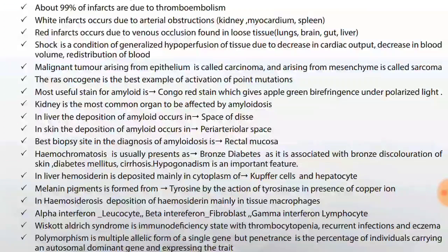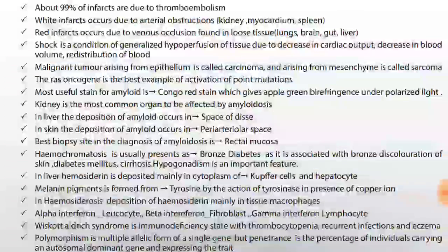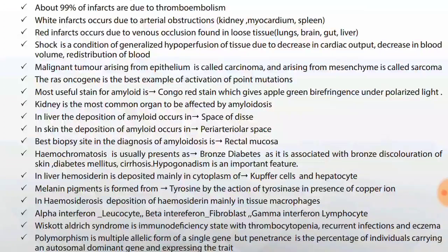Malignant tumor arising from epithelium is called carcinoma and arising from mesenchyme is called sarcoma. The ras oncogene is the best example of activation of point mutations — just remember ras oncogene is for point mutations.